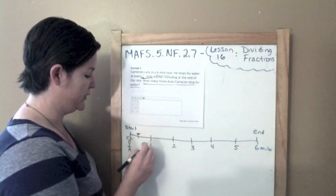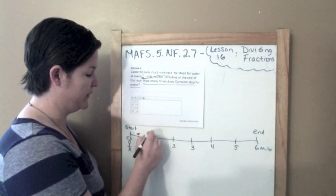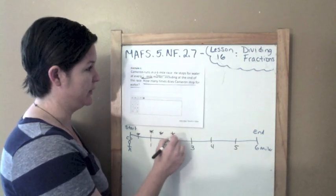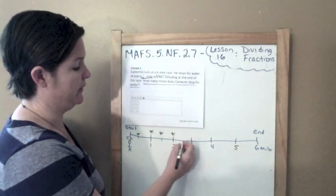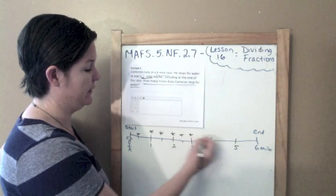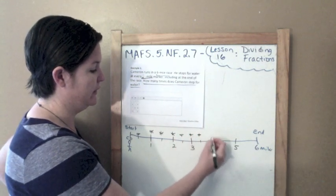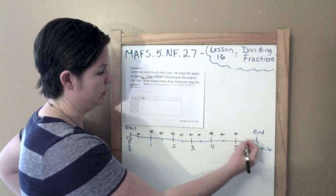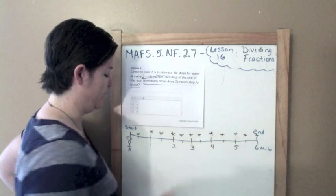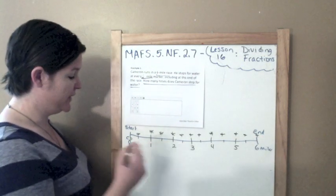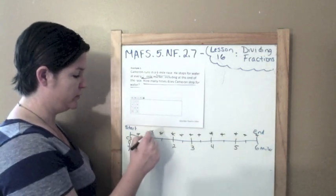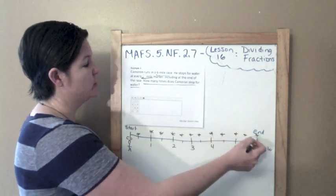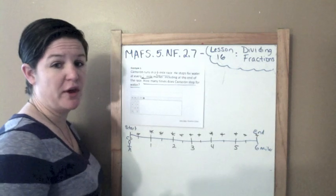He stops right here — we put a little star — then runs another half and stops there, then another half and stops, and so on, continuing at each half-mile marker all the way to the end. Counting all the stops: 1, 2, 3, 4, 5, 6, 7, 8, 9, 10, 11, 12 stops for water.